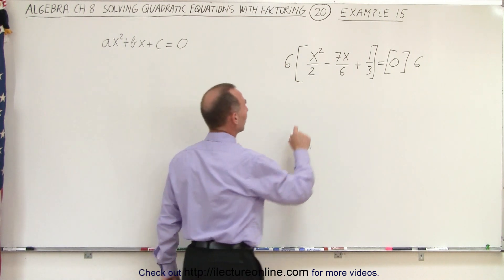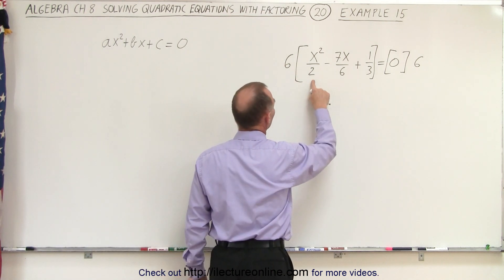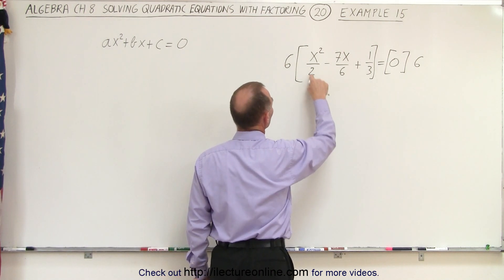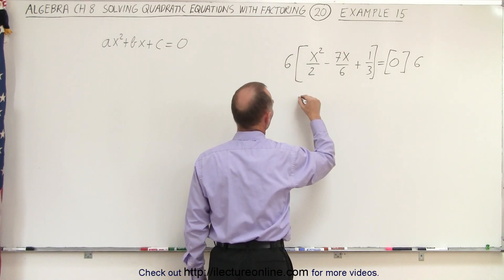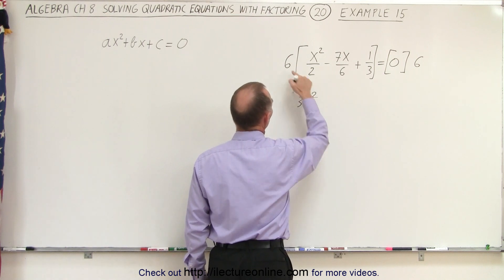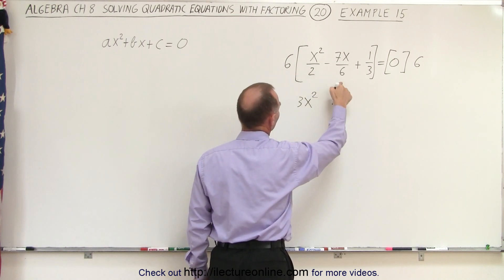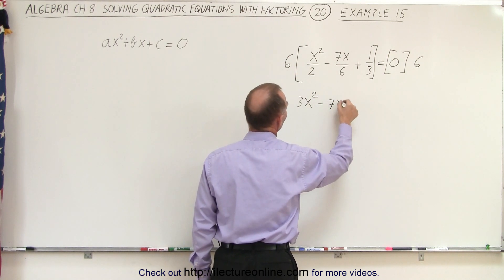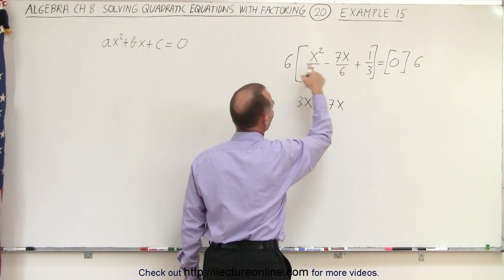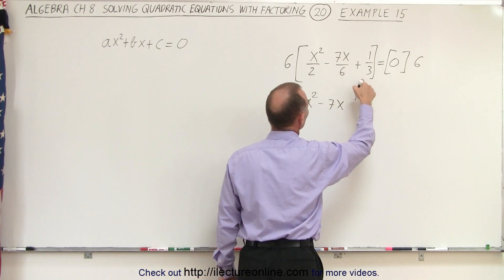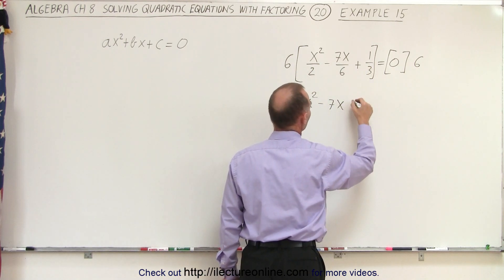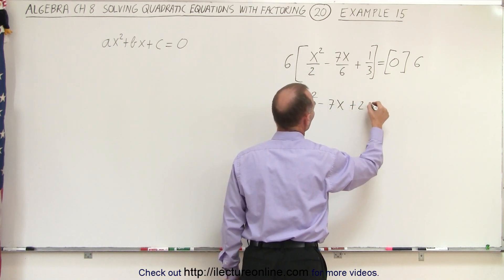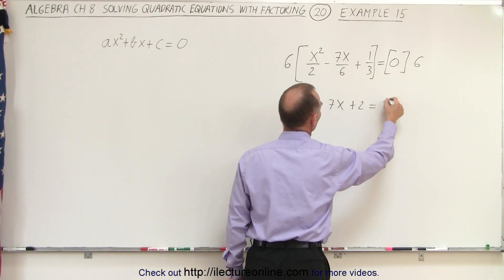Here, 6 divided by 2 is 3. 3 times x squared gives us 3x squared. 6 divided by 6 is 1, so minus 7x. And 6 divided by 3 is 2. 2 times 1 plus 2 equals 0.